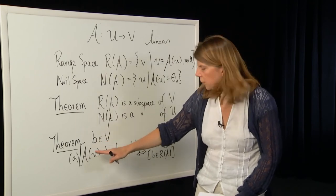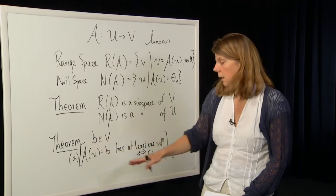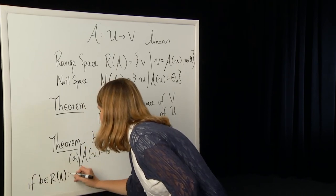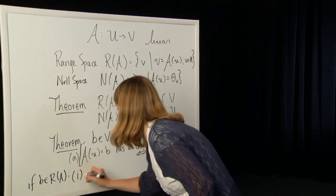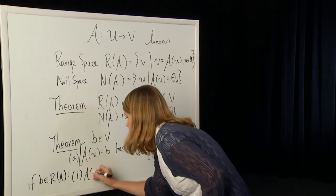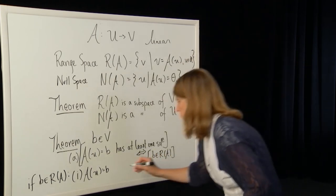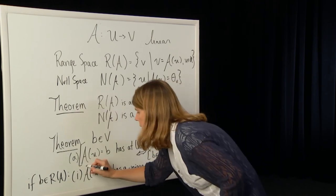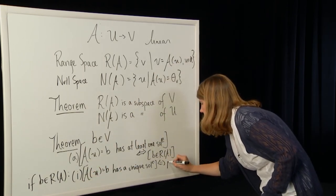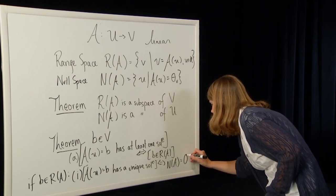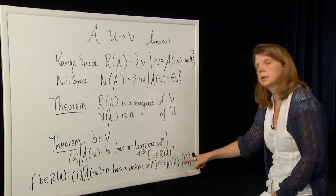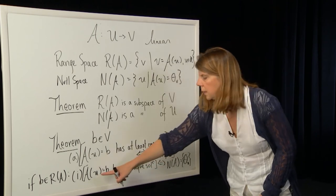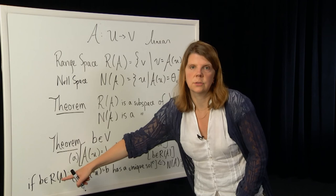If b is in the range of A, we can say two more things. First: the linear equation A(u) = b has a unique solution if and only if the null space of A is simply the zero vector — written as {0} in U. So if the only element in the null space is the zero vector, then the equation has a unique solution given b is in the range of A, and vice versa.